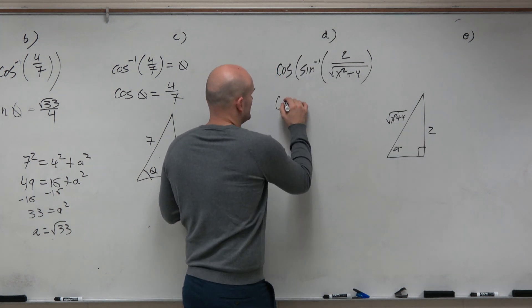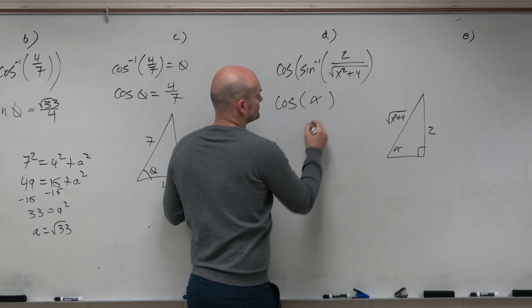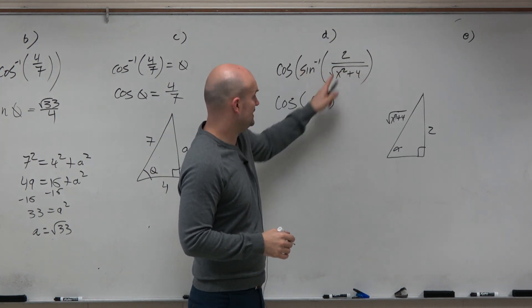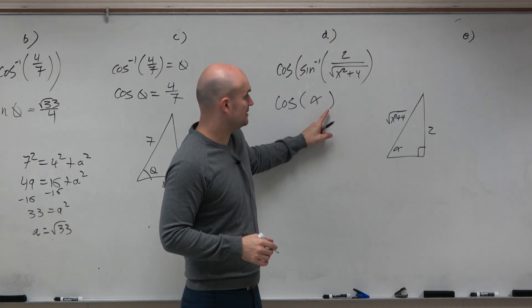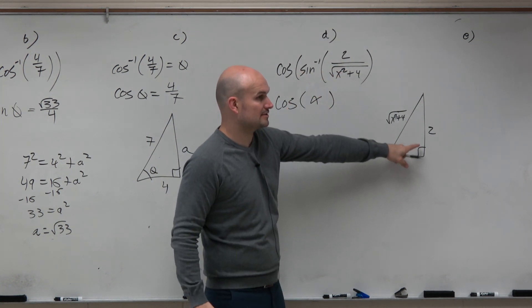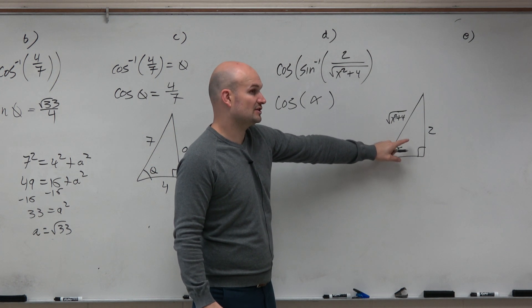So therefore, really, I just need to figure out the cosine of alpha. This we're saying equals alpha. And from that, I can draw the triangle. Now I need to find the cosine of alpha.